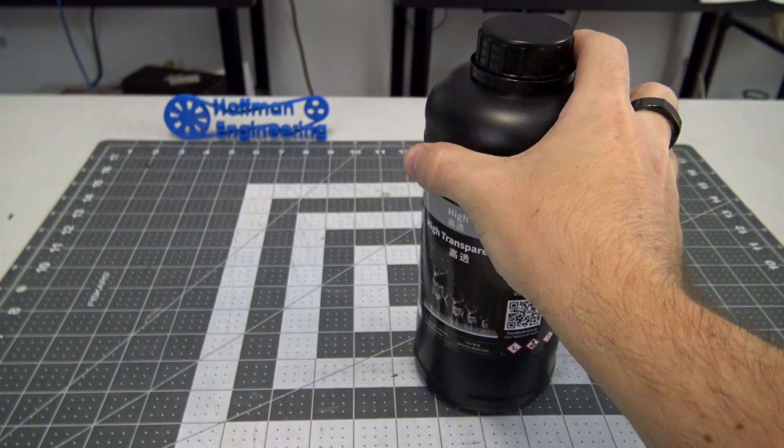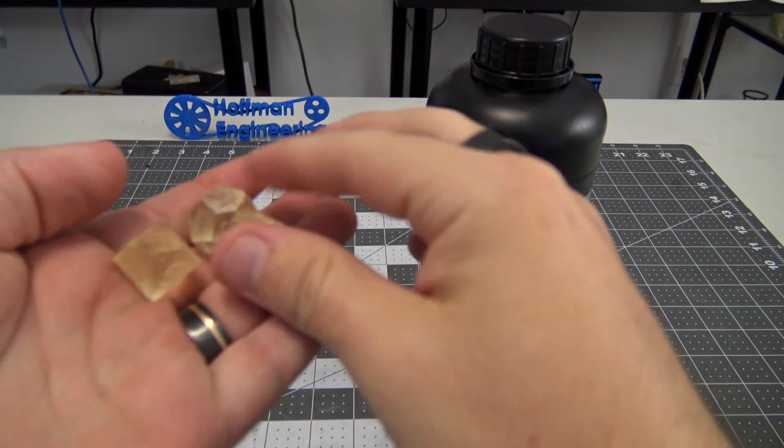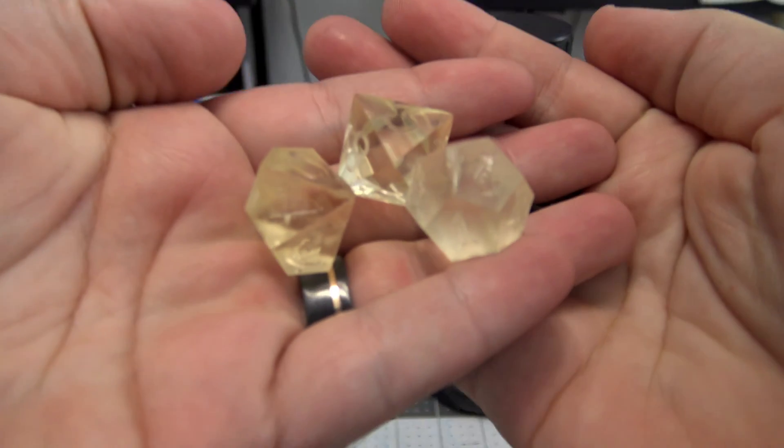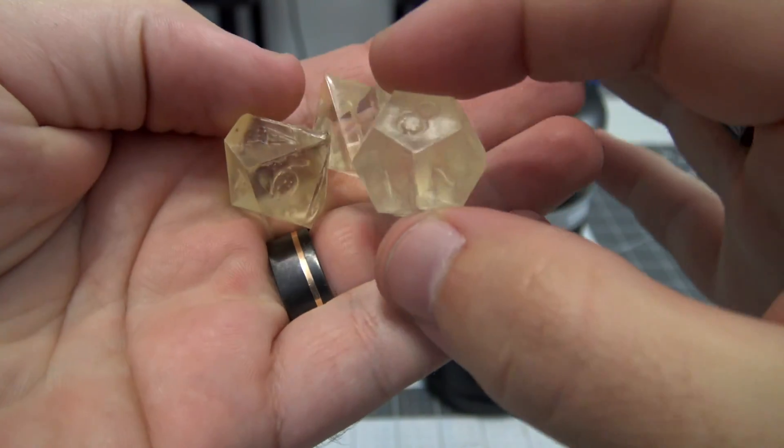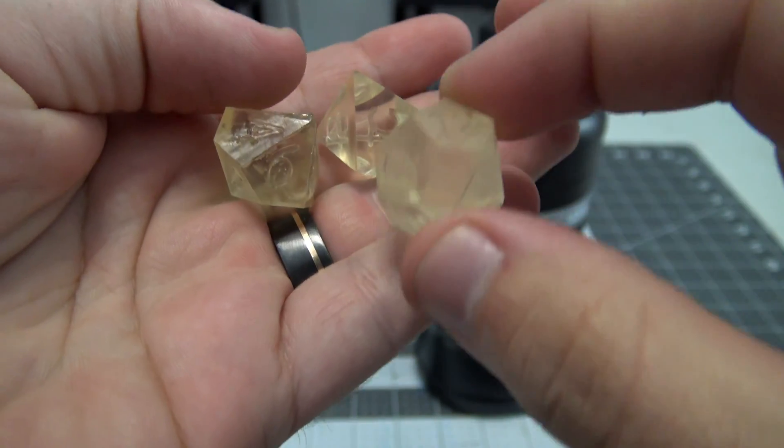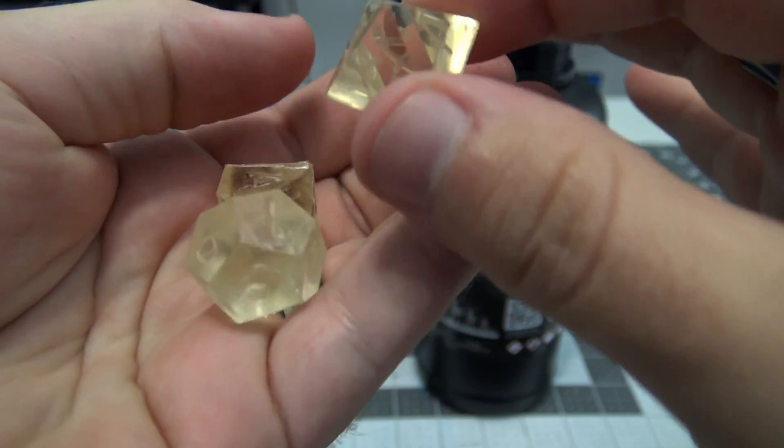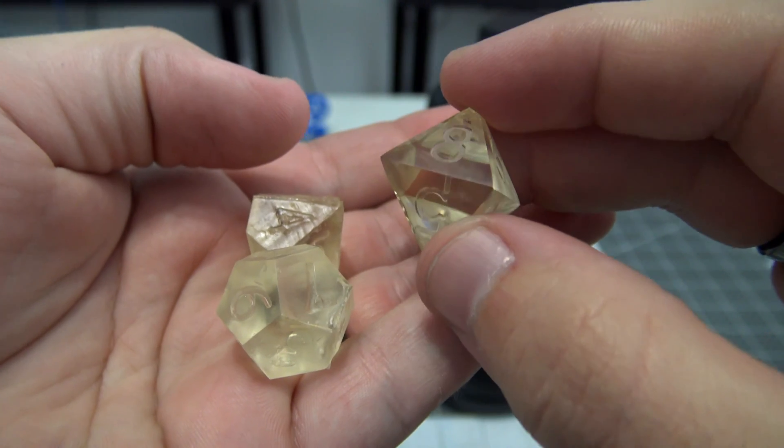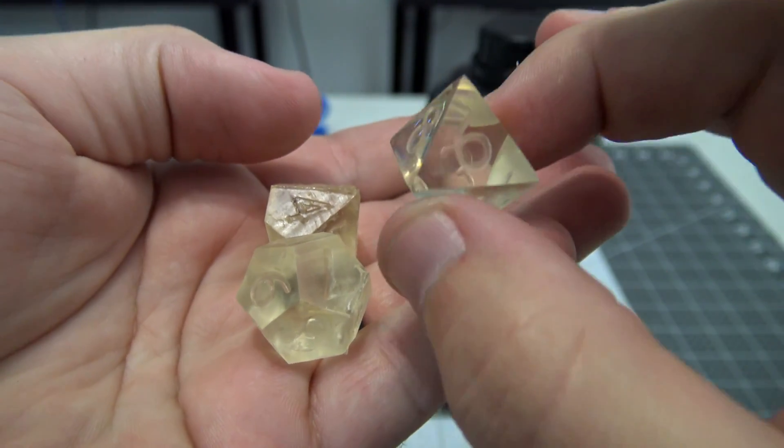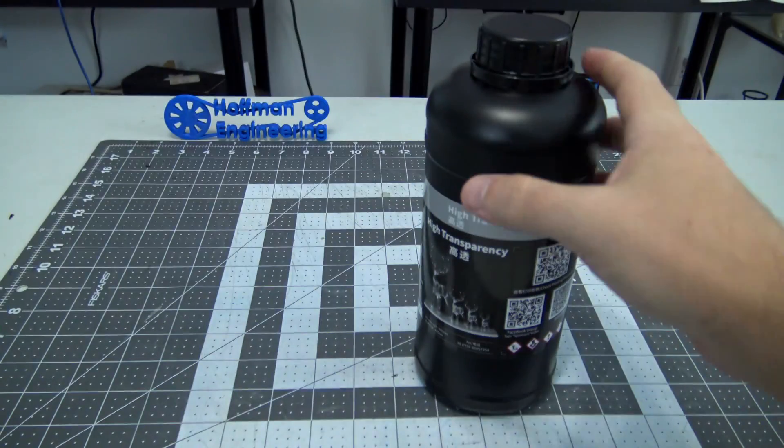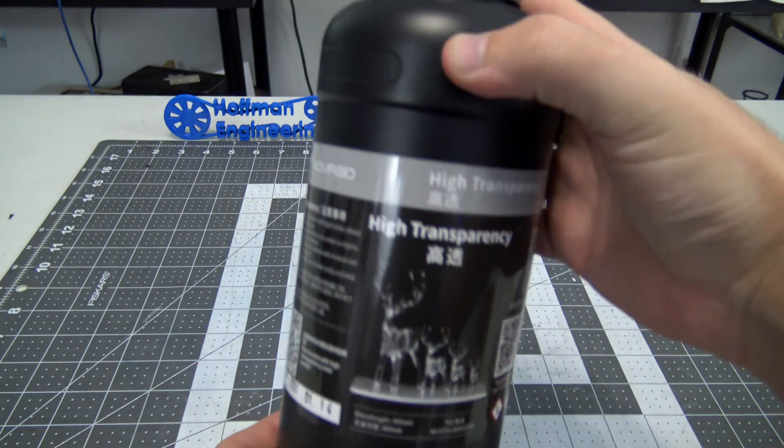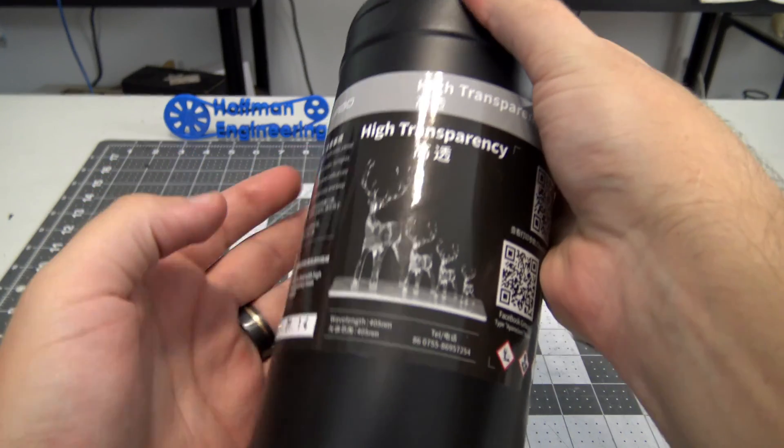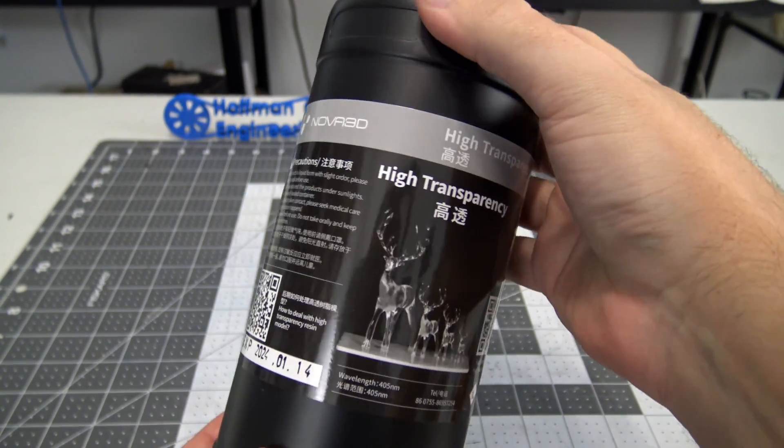Now I've used a lot of clear resins before, particularly in making these clear dice. However, clear resins end up not being very clear. You often get very yellow clearish prints. But even when you polish the clear resin, they end up still being a little bit yellow and not crystal clear. So when I found out that Nova 3D has what they call high transparency resin offering crystal clear resin performance, I knew I had to reach out.